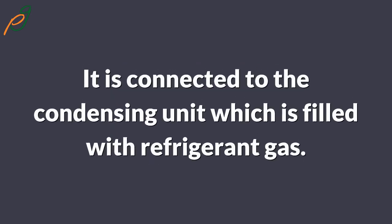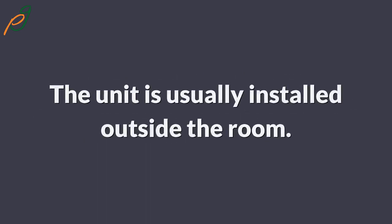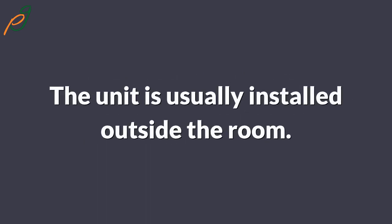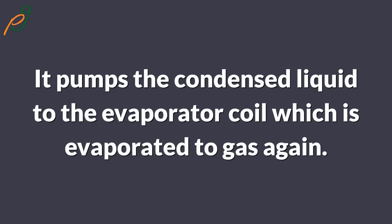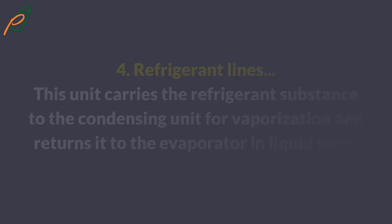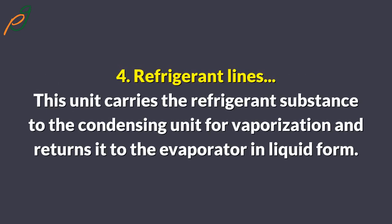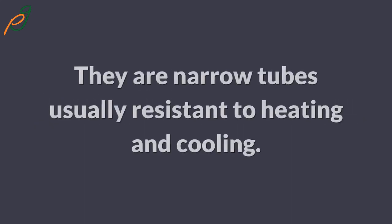The third component is the evaporator coil, which helps to cool the heated air. It is connected to the condensing unit, which is filled with refrigerant gas. The condensing unit is usually installed outside the room; it pumps the condensed liquid to the evaporator coil, which is evaporated to gas again. The fourth component is the refrigerant lines; this unit carries the refrigerant substance to the condensing unit for vaporization and returns it to the evaporator in liquid form.